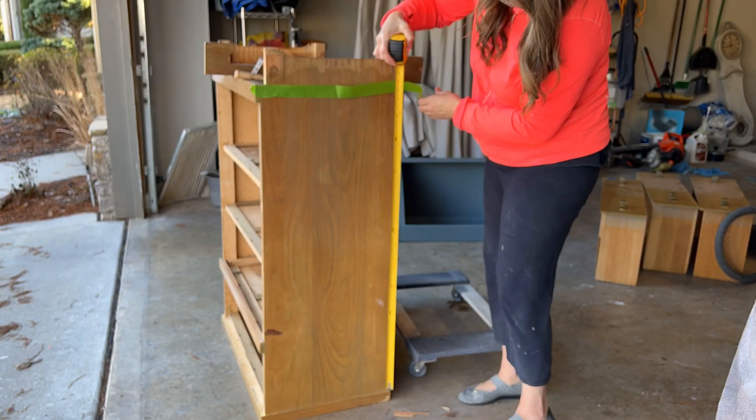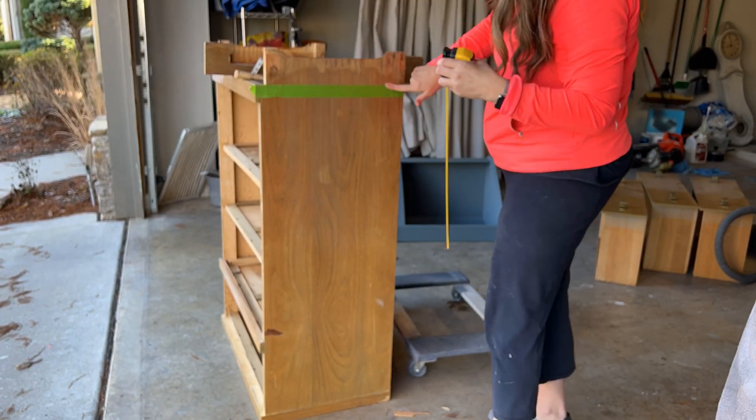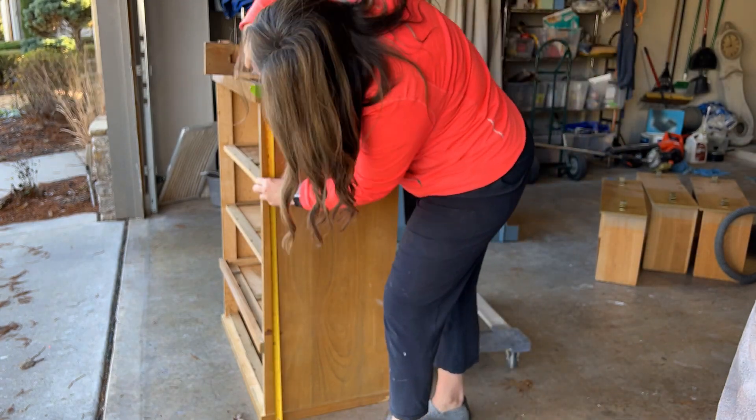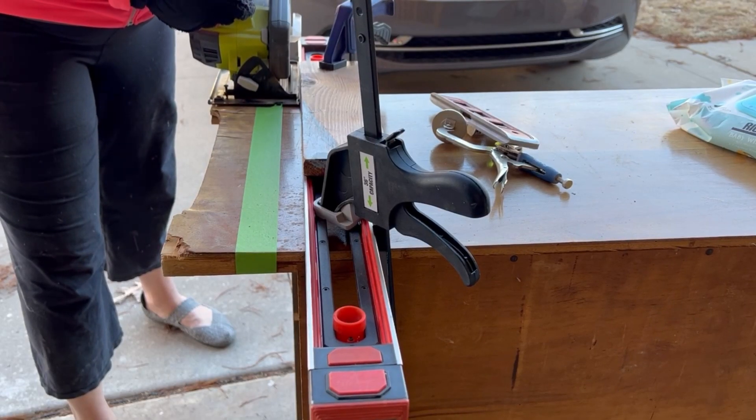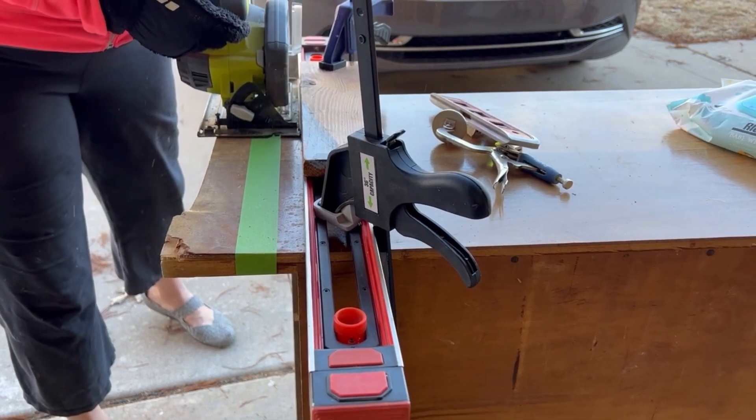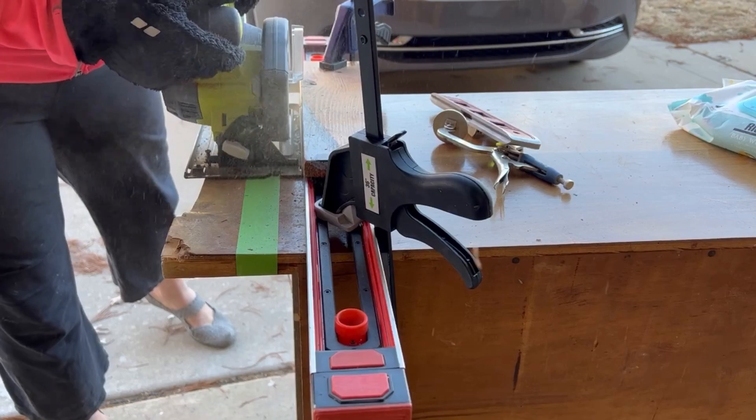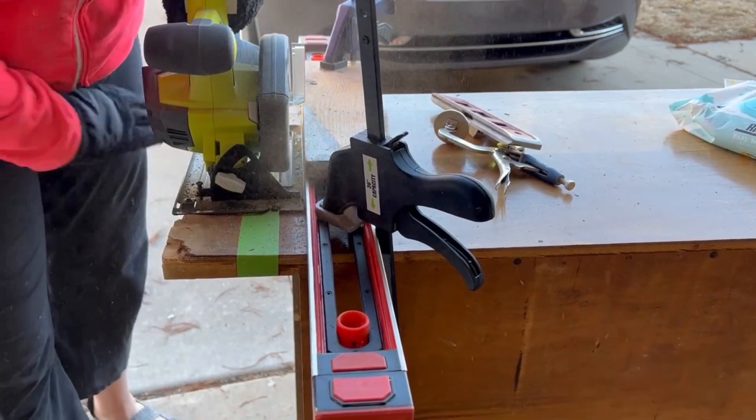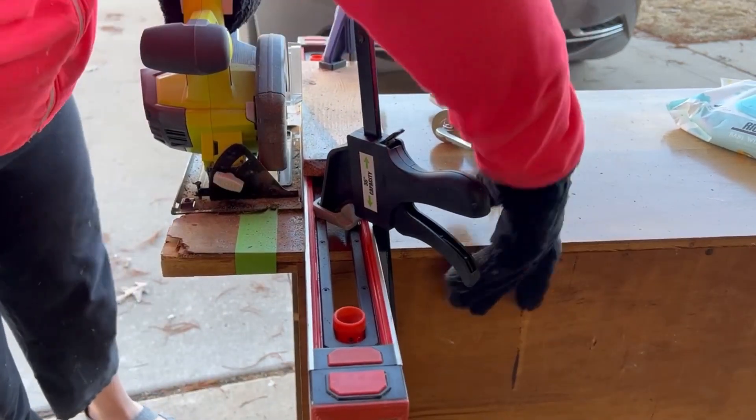I got out my tape measure and measured from the top of the dresser down to the bottom because I wanted to make sure I got a straight cut. Then I set up my circular saw with a straight edge, clamped that straight edge down, and ran the circular saw along the straight edge to get a nice straight cut.